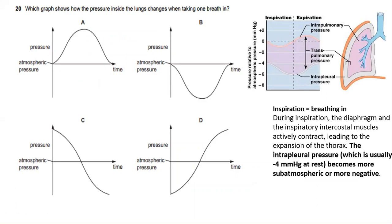Question number 20. Which graph shows how the pressure inside the lung changes when taking one breath in? Inspiration in this context is breathing in. And during inspiration, the diaphragm and the inspiratory intercostal muscles actively contract, leading to the expansion of the thorax. And the intrapleural pressure, which is usually minus 4 mmHg at rest, becomes more sub-atmospheric or more negative. So the most suitable explanation is the answer is B.